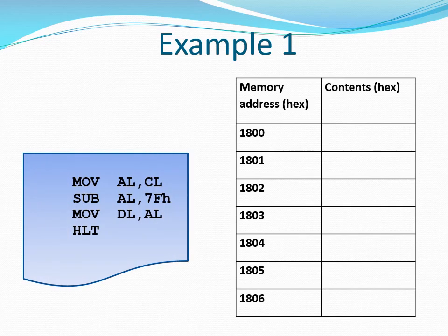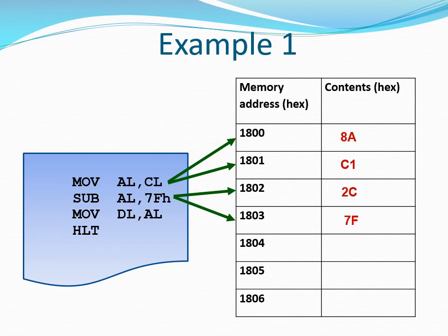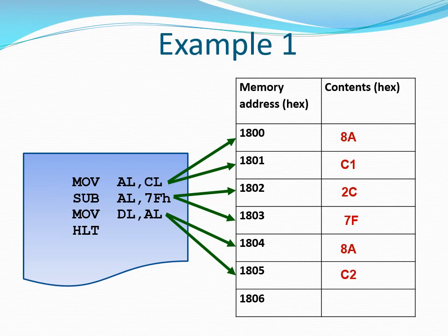Let's illustrate the assembling process using an example. We have a program here that we want to convert into machine code and load into memory starting at address 1800h. The first instruction gives us a 2-byte machine code loaded into addresses 1800 and 1801. The second instruction gives another 2-byte code. The third instruction gives another 2-byte code loaded into addresses 1804 and 1805. The last instruction is a single-byte instruction loaded into location 1806h.